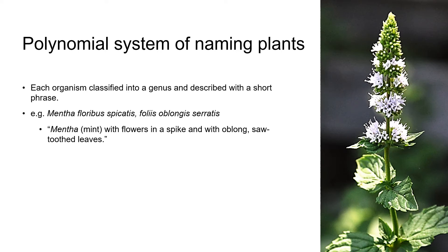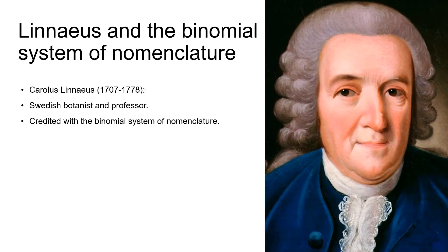With all of these plants arriving in Europe from other countries, it was realized that the polynomial system of naming and describing plants was too cumbersome, and that an easily referable naming and classification system was needed that would enable people to identify an unknown plant. At this point in the history of botanical nomenclature enters the Swedish botanist and professor Karl Linnae, later to be better known by his Latinized name of Carolus Linnaeus. Linnaeus is often credited as being the founder of the modern system of nomenclature, but one of the goals of this history is to give credit to the many other scholars and botanists who were involved in this process.